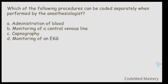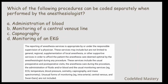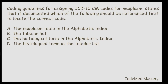Next question: Which of the following procedures can be coded separately when performed by the anesthesiologist? Option A: administration of blood. Option B: monitoring of a central venous line. Option C: capnography. Option D: monitoring of an EKG. Under anesthesia guidelines in your CPT book, unusual forms of monitoring — such as intra-arterial, central venous, and Swan-Ganz — are not included. So central venous must be coded separately. The right answer is option B.